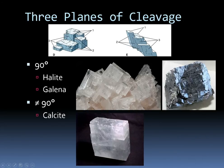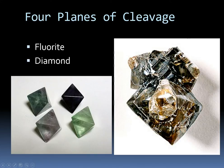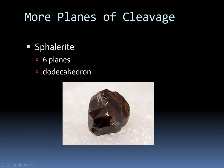Three planes of cleavage tend to give you really interesting-looking minerals that look almost like stair steps. You can have 90-degree cleavage, which gives you beautiful cubic cleavage like the halite or galena, a lead sulfide mineral. Or like calcite, it looks kind of like a cube that's been squished over — this is called rhombohedral cleavage. Fluorite and diamond have four planes of cleavage, making octahedrons. And sphalerite has dodecahedral cleavage, meaning six planes, giving a 12-sided crystal form.